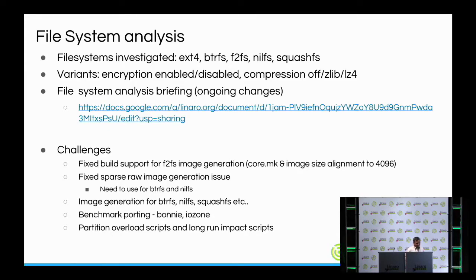On the filesystem side, we investigated a couple of options. We started with ext4 and btrfs — btrfs is the B-tree based filesystem. Then f2fs, implemented by Samsung, and also nilfs and SquashFS. For btrfs we tried various compression algorithms: zlib and lz4. We generated detailed analysis covering small data loads up to 512 MB and also analyzed disk impact and fragmentation for these file systems.